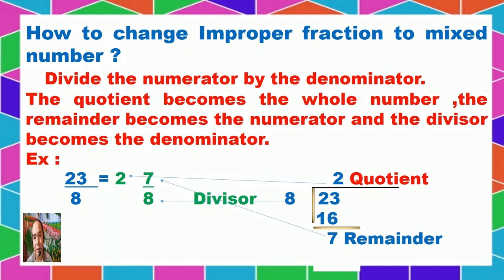And 7, which is the remainder, will become the numerator. And 8, which is the divisor, will become the denominator. So the result of changing the improper fraction to a mixed number is 2 and 7 over 8.